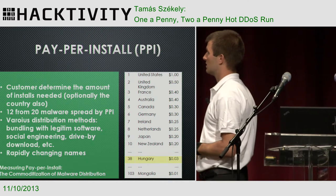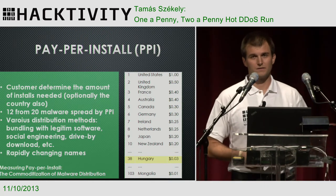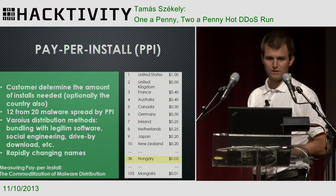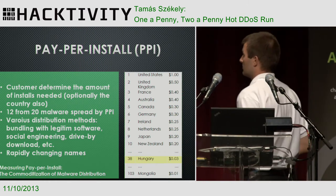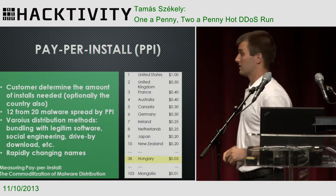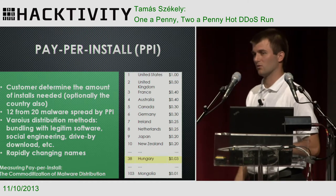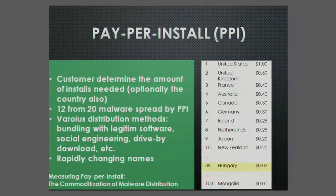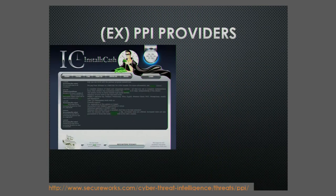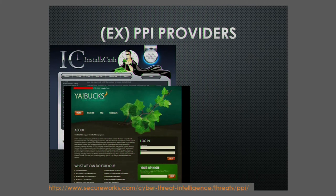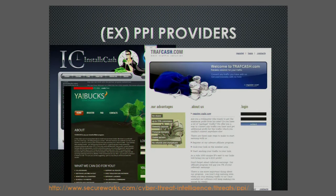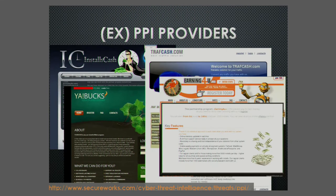This is the essence of the PPI service in a few lines. There is another white paper about that with test results, also describing the test environment. According to the white paper statistics, 12 out of 20 malware samples are spread through this model, which is significant. They use all methods for spreading: drive-by downloads as well as embedded malware in digital software and social engineering. These PPI providers often change their names — the provider stays the same, the one running the business — but the name is often changed. You can read about some ex-PPI providers at the link at the bottom.